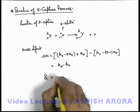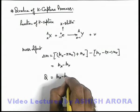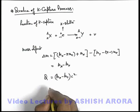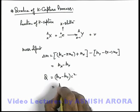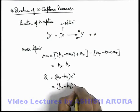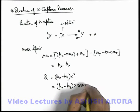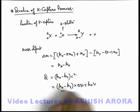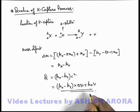So here the Q value can be written as (M_X - M_Y) multiplied by c squared. Or if the masses are in amu, we can write (M_X - M_Y) multiplied by 931.5 MeV, which is the total energy released in the process of K-capture.